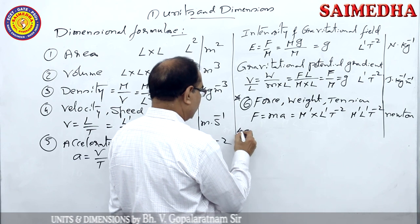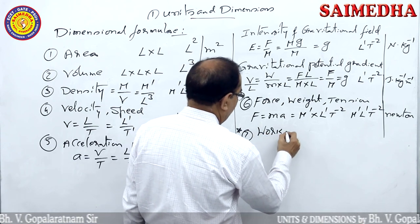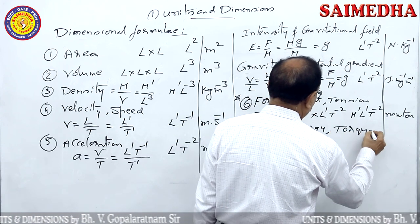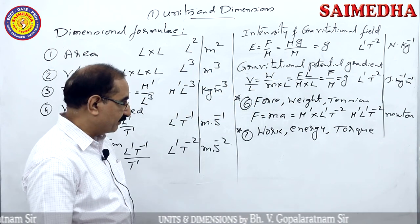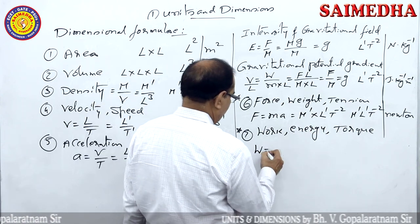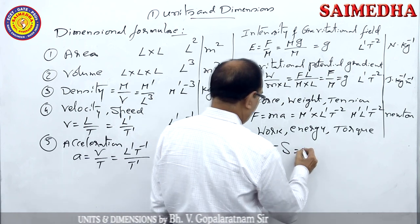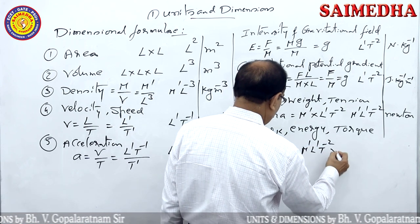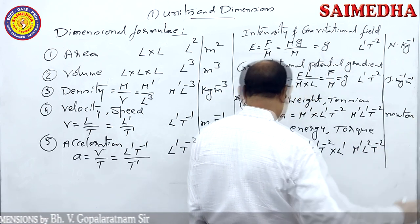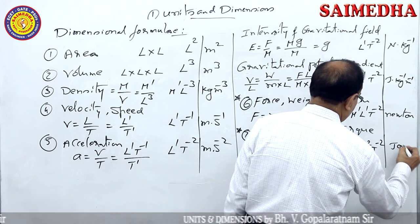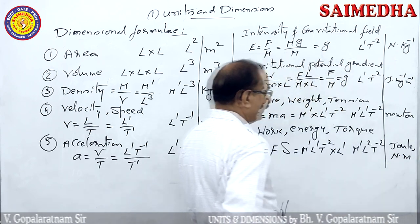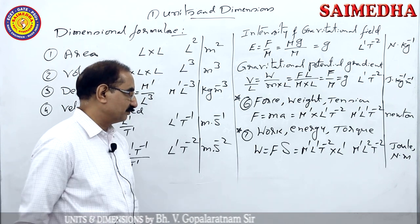Work, energy, and torque share the same dimensional formula, though work is a scalar and torque is a vector. Work = force × displacement: M¹L¹T⁻² × L¹ = M¹L²T⁻². The unit of work and energy is Joule. However, torque is expressed in Newton-meters, not Joules.